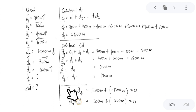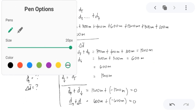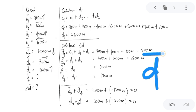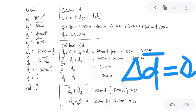Because all vectors cancel to 0, the displacement is 0. That is all for this lecture video on sample problems regarding distance and displacement.